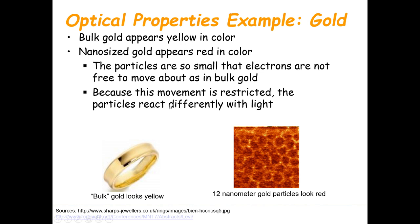The particle is so small that the electrons are not free to move about as in bulk gold. In bulk gold, we have yellow color because the electrons are free to move about. But at the nanoscale, the electrons are not free to move. Because of this restricted movement of the electrons, the particles react differently with light — the change in color from yellow to red is due to restricted electron movement.